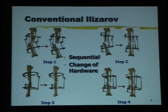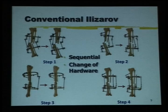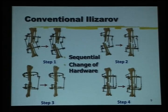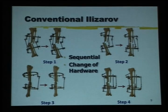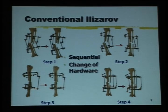With conventional Ilizarov, when you have a deformity with shortening, angulation, and rotational deformity, this requires sequential correction: step one, correct the shortening by distraction; step two, change the hardware and correct angulation in the AP plane with hinges; step three, change the hinges and correct angulation in the lateral plane — these two and three can be combined if it is an oblique plane. Finally, in step four, you correct the rotation.